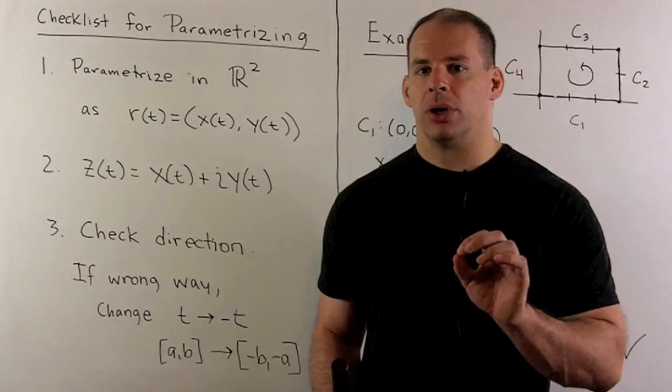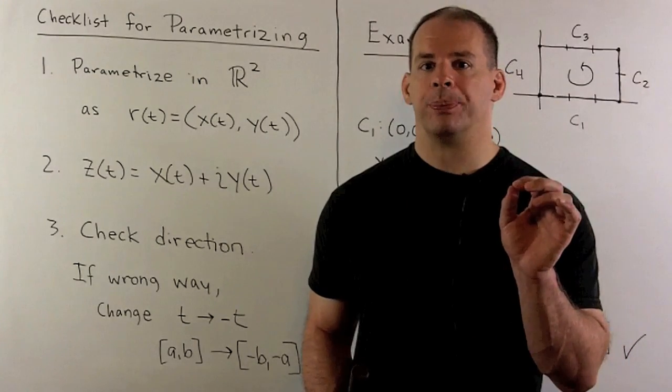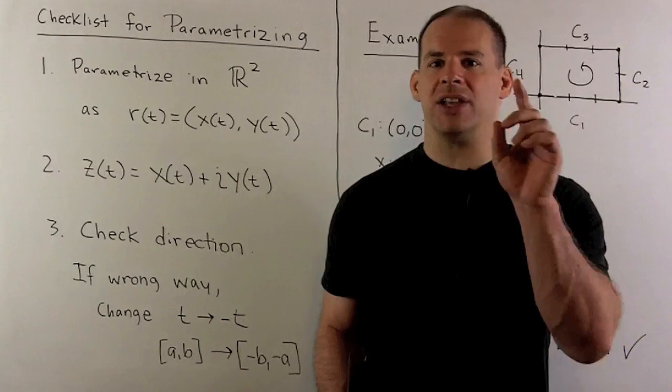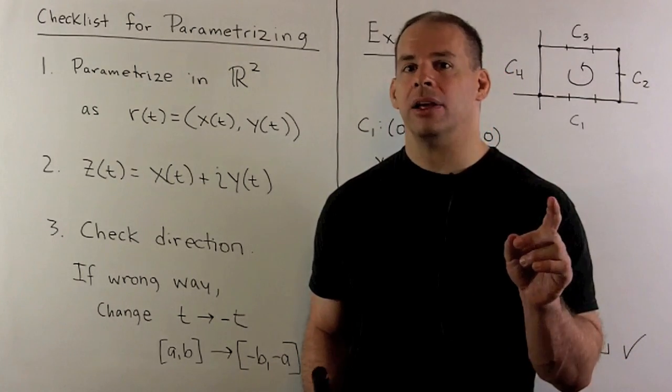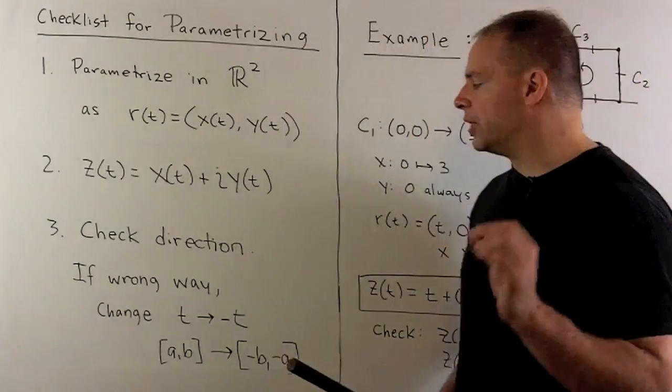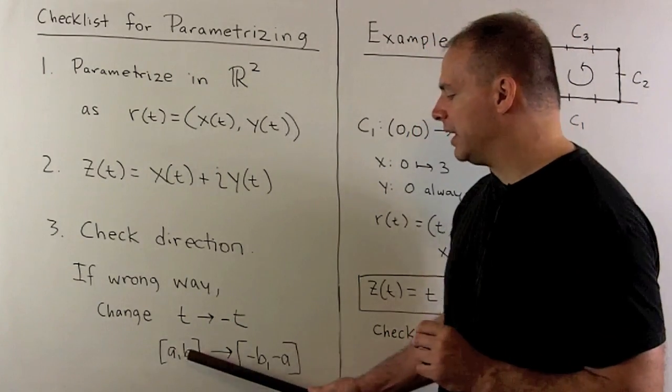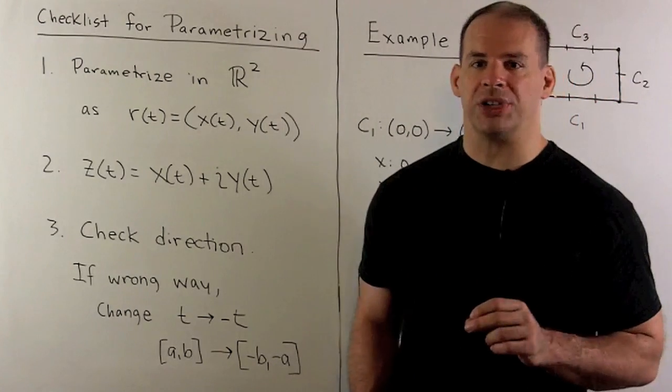Now when we do line integrals, we're going to be interested in orientation or direction of our curve. So we would need to check that the parametrization that I use coincides with our orientation. If not, it's easy to fix. All you need to do is send t to minus t, then change your interval from ab to minus b and minus a. So we'll see how that works in an example.